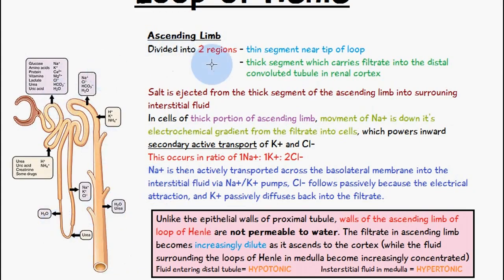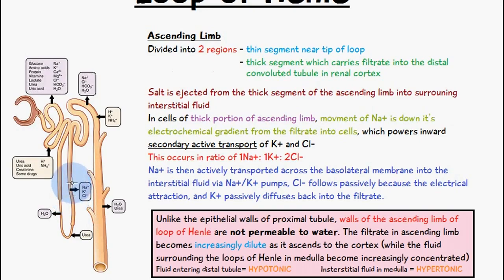We can divide the ascending limb into two regions: the thick and thin segments. The thin segment is just after the initial loop, and then we have the thicker segment. This thick segment of the ascending limb of the loop of Henle carries the filtrate to the distal convoluted tubule, which is located in the renal cortex.